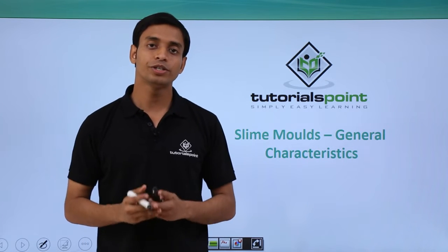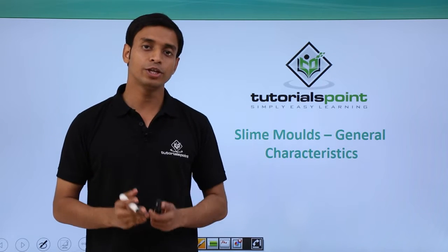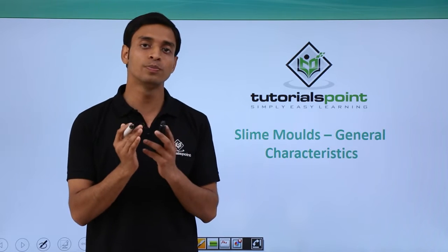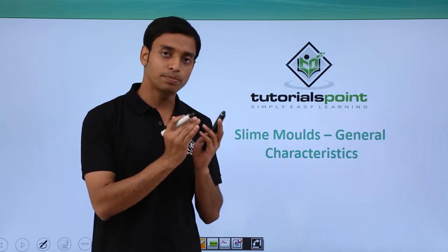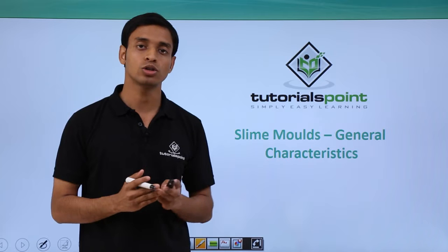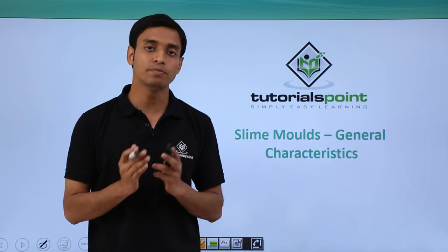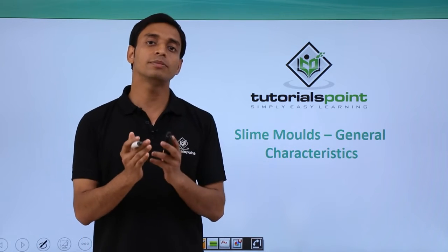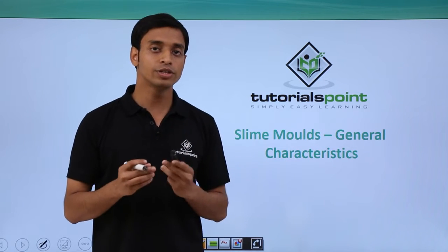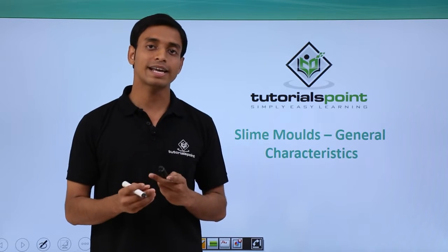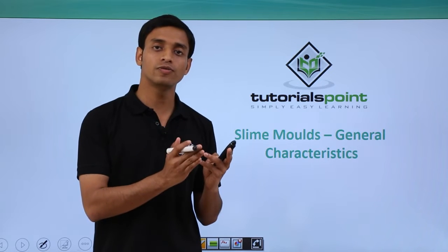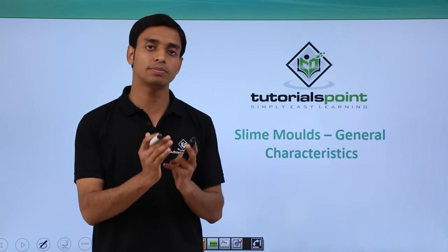Hello everyone, welcome to Tutorials Point. In this video we are going to talk about a group of protists which belongs to the consumer-decomposer group — these are basically the slime molds. Previously we have talked about the photosynthetic group of protists, which included the dinoflagellates, chrysophytes, and euglenoids. Those were photosynthetic; now we are going to talk about the consumer-decomposer type of protists.